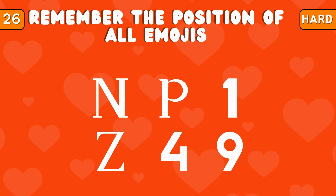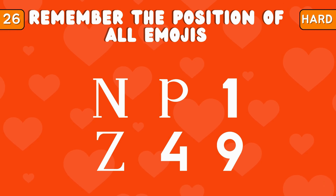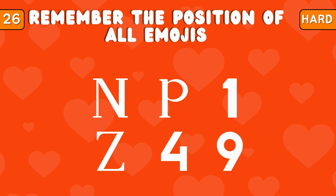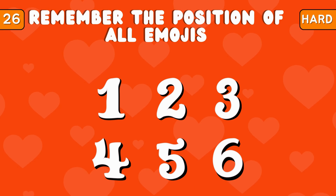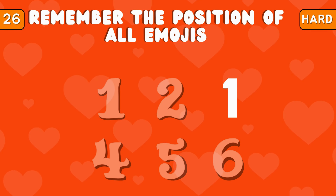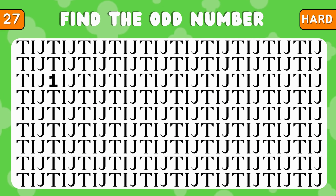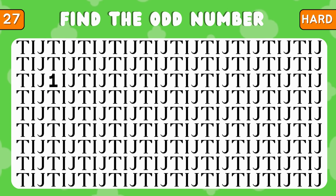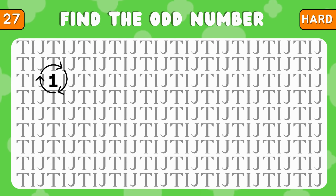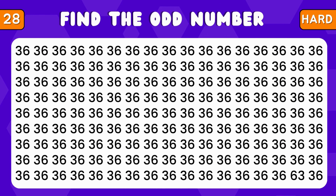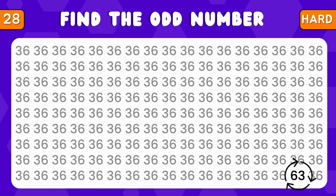Memory test. Remember the position of all numbers and letters. Where is the number one located? Time's up! Check out the answer. Can you find the number one? Identify the odd number in this pair. Absolutely, the number is 63.